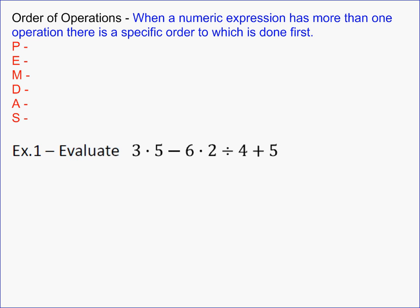There is an acronym that most people know called PEMDAS that helps us remember this order. The first thing you always look at are parentheses — you always want to look inside parentheses first. The next thing you always look at is exponents. You always want to evaluate exponents first if at all possible, because you don't want to multiply something that has an exponent with something that doesn't.